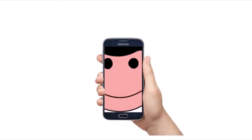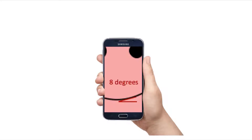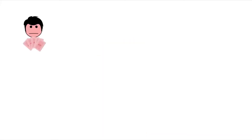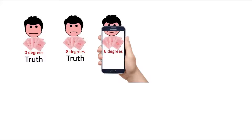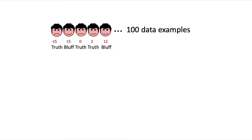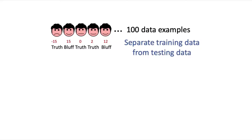You're going to use your smartphone to collect data on the angle of Sam's mouth. You secretly capture the angle of Sam's mouth and also keep track of whether or not he was bluffing each time. Say you've now got 100 rounds of data about Sam's mouth angle and whether he was bluffing. Remember, you should always have training data separate from the test data — training data is what you train your model on, and test data is what you use to evaluate how well your model does. For example, you could use 65 data points for training and 35 for testing.